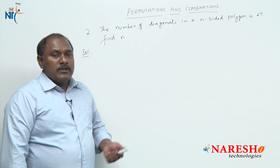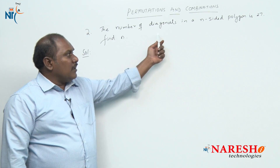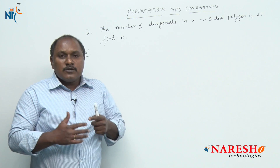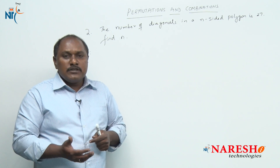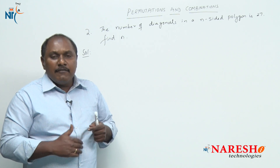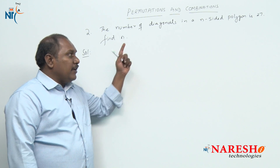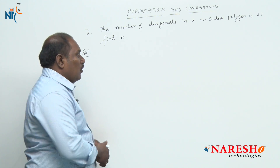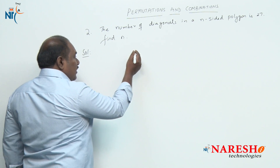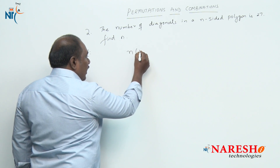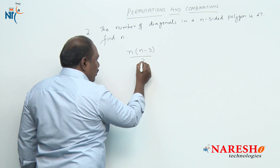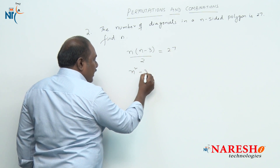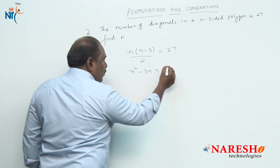Now let us look into the next problem. The number of diagonals in an n-sided polygon is 27 — find n. This is a reverse question compared to the first one: before we knew the number of sides and found the diagonals; here we know the number of diagonals and must find the number of sides. Using the formula n(n−3)/2 = 27, we get n² − 3n = 54.